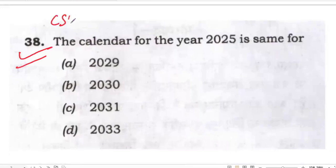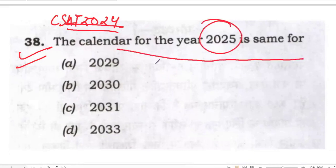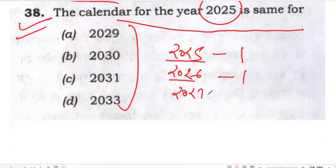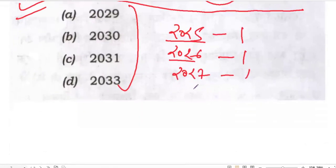The calendar for the year 2025 is same for which year? Now let's calculate the odd days. 2025 is a normal year, one odd day. 2026 is a normal year, one odd day. 2027 is a normal year, one odd day. 2028 is a leap year, two odd days.